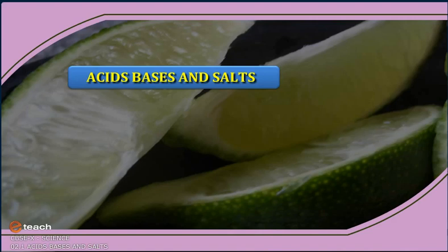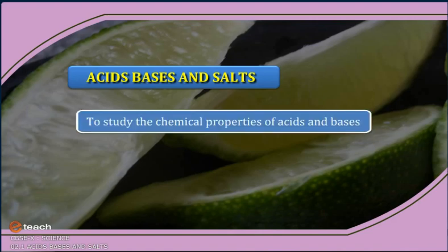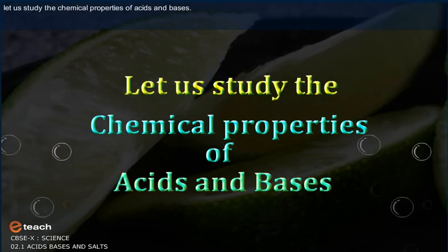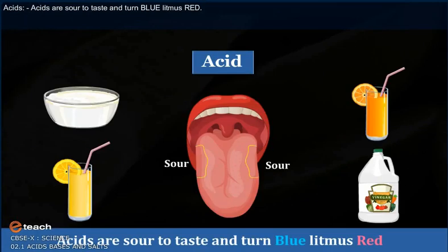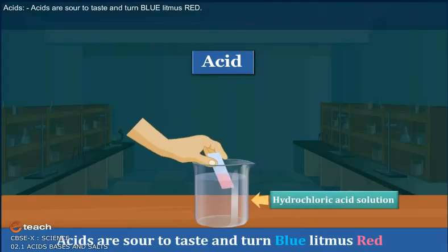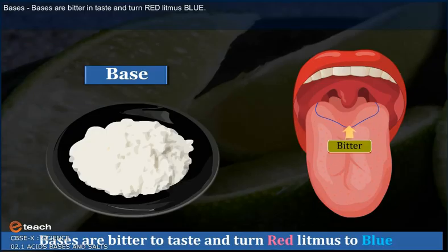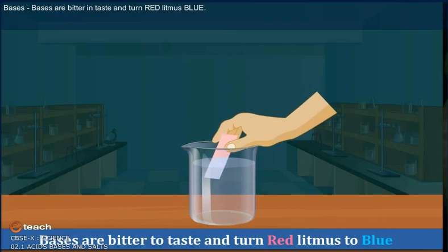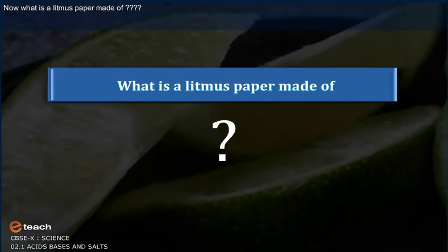Acids, bases and salts — let us study the chemical properties of acids and bases. Acids are sour to taste and they turn blue litmus red. Bases are bitter and they turn red litmus blue.